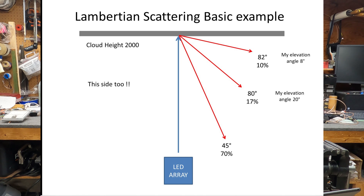In this example, on the left-hand side of the screen, you see cloud height at 2,000 feet. The LED array is pointed perpendicular from the ground, straight up. We're making the assumption that the cloud is exactly at 2,000 feet, doesn't vary, is homogeneous — that falls into the category of Lambertian scattering. The question is: what happens as you move off-axis from the LED array? There are formulas for it. At 45 degrees, you recover 70% of the power incident upon that surface.